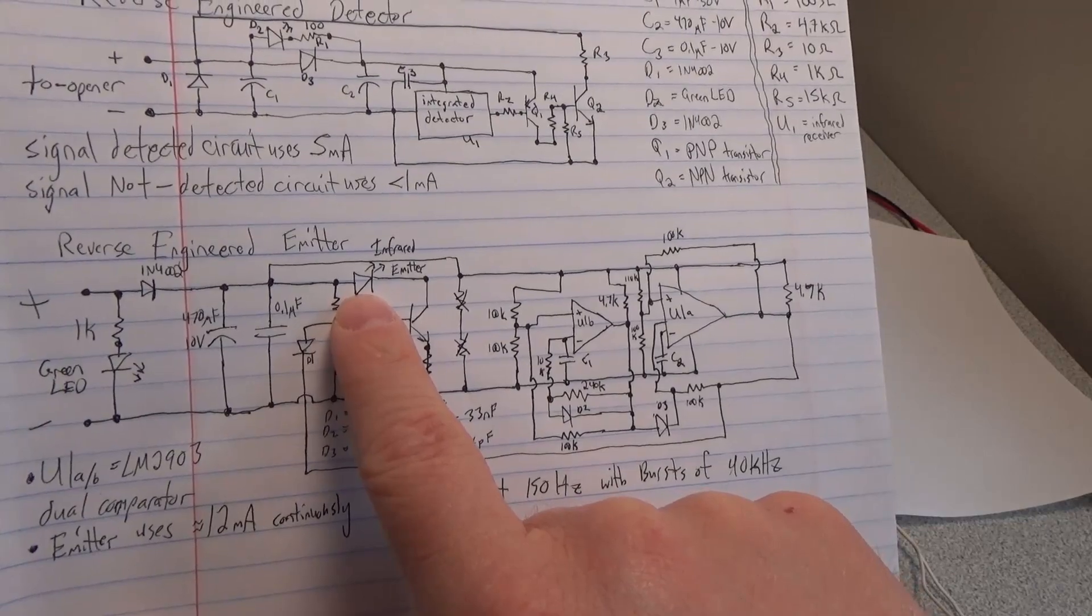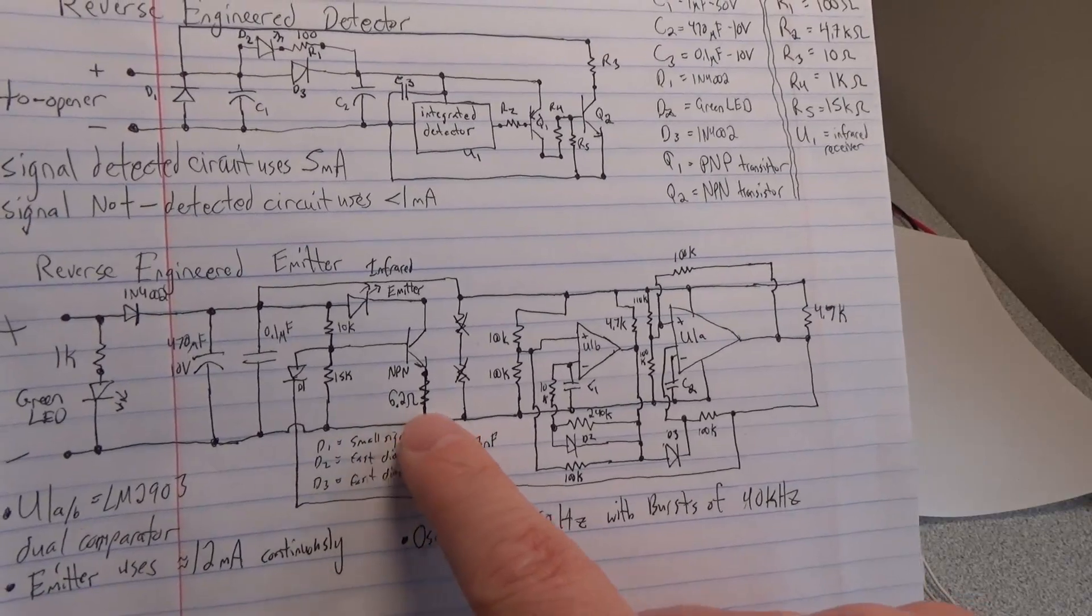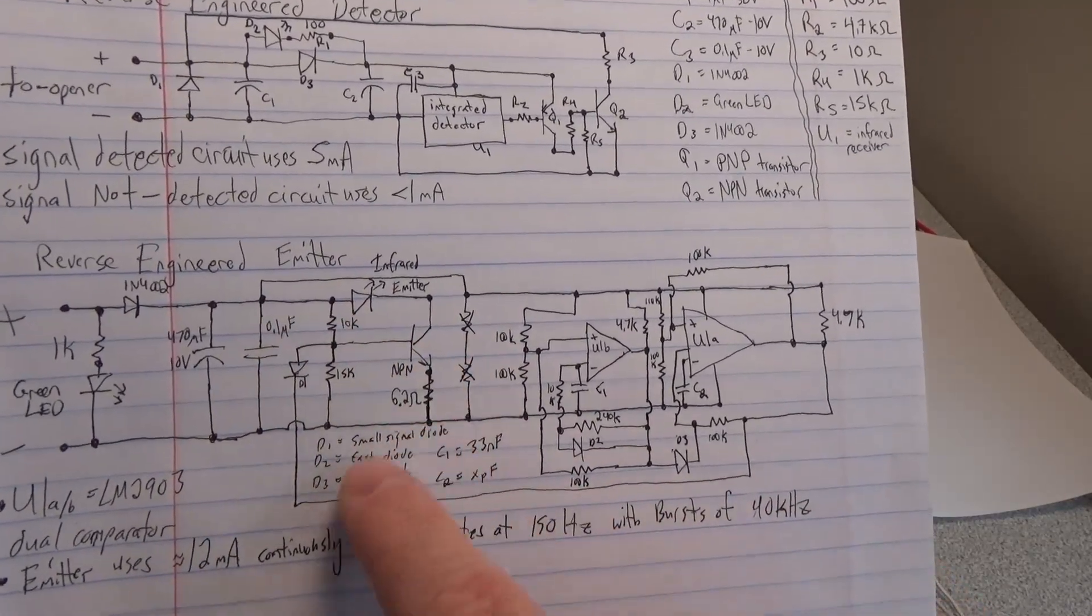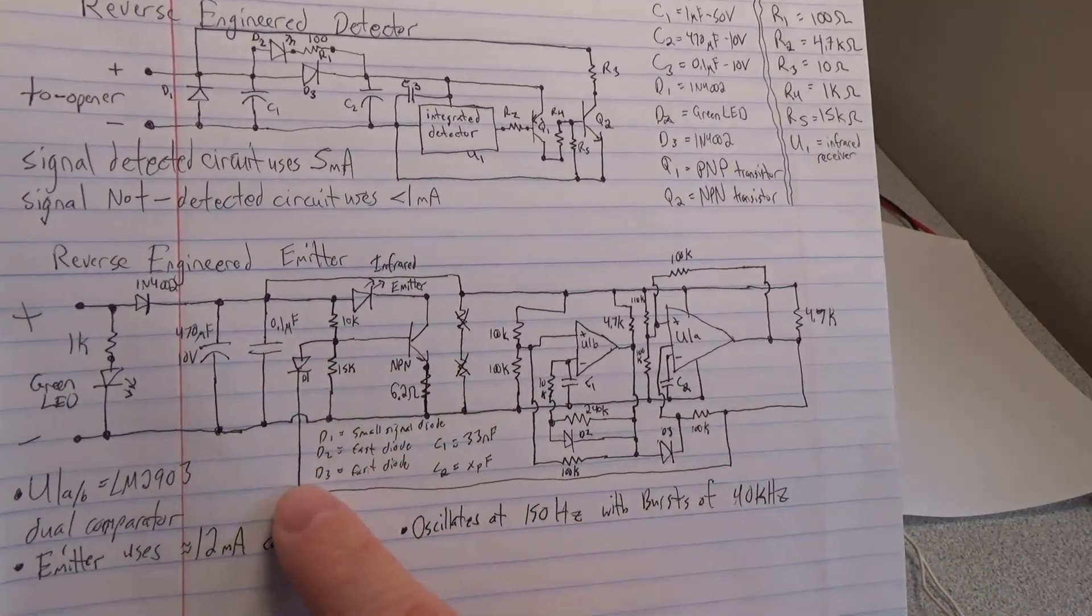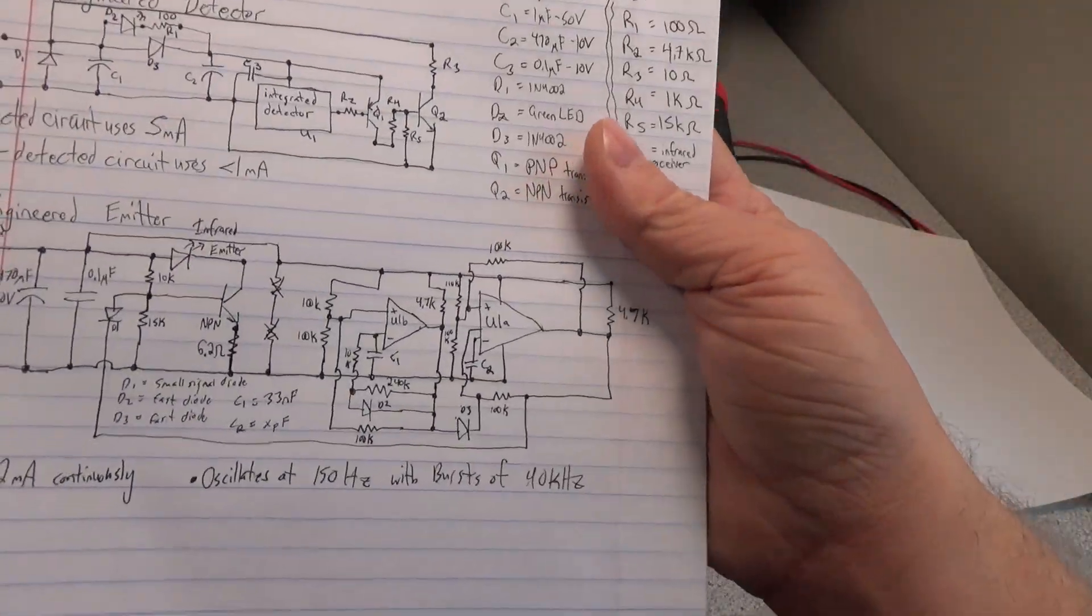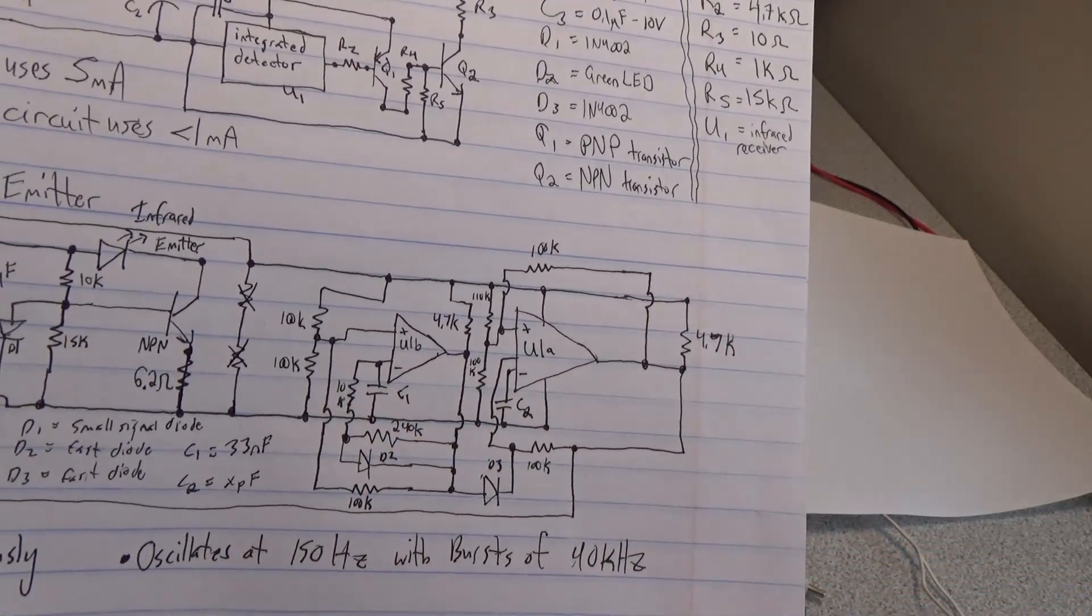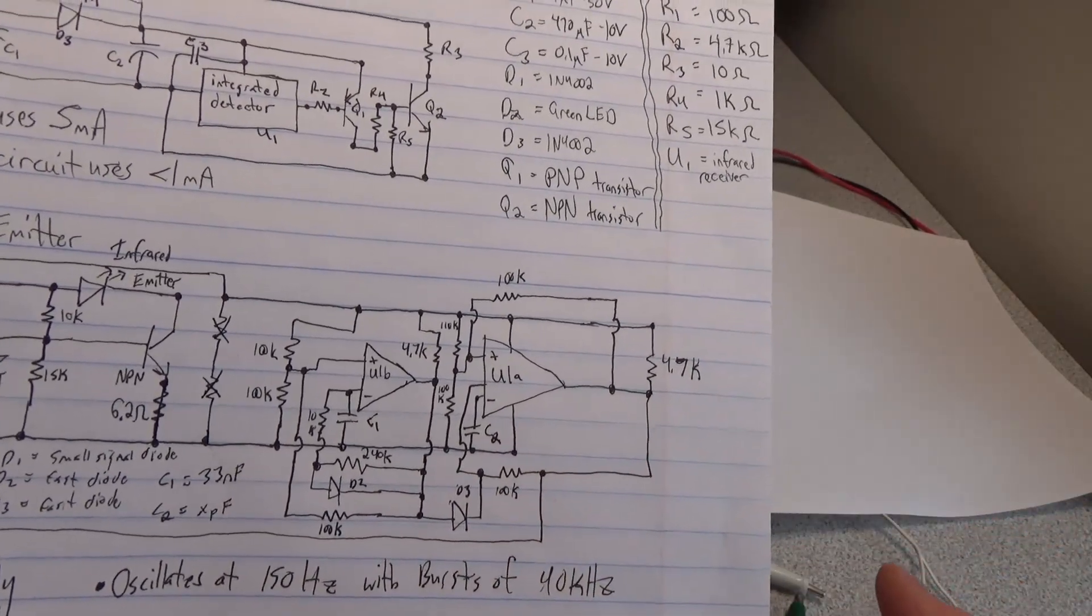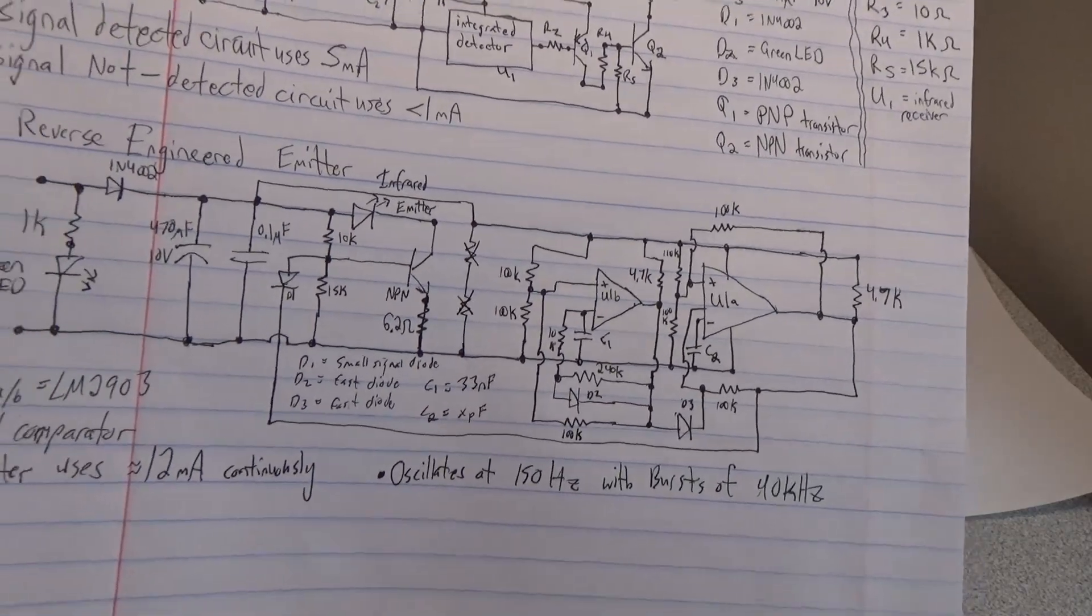This emitter, which is the infrared LED, is being switched by this transistor and a 6.2 ohm resistor. This would be biased at some point, and then it pulls it down through these two oscillators. These are our oscillator sections - one operating at a higher frequency and one at a lower frequency. I didn't do too much more on that, but that's the basics of how this circuit works.